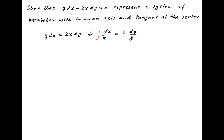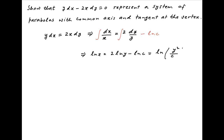Now integrating both sides and introducing a constant of integration say minus ln(c) on the right hand side, this can be written as ln(x) is equal to 2 times ln(y) minus ln(c), which using properties of logarithms can be written as ln of y squared upon c.